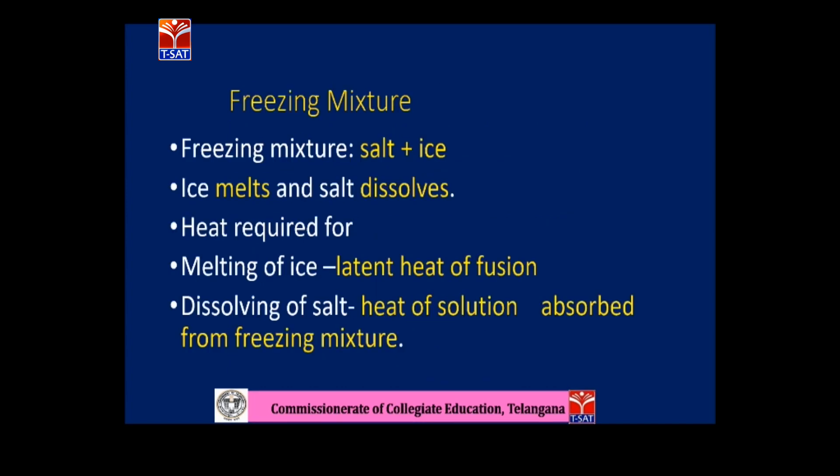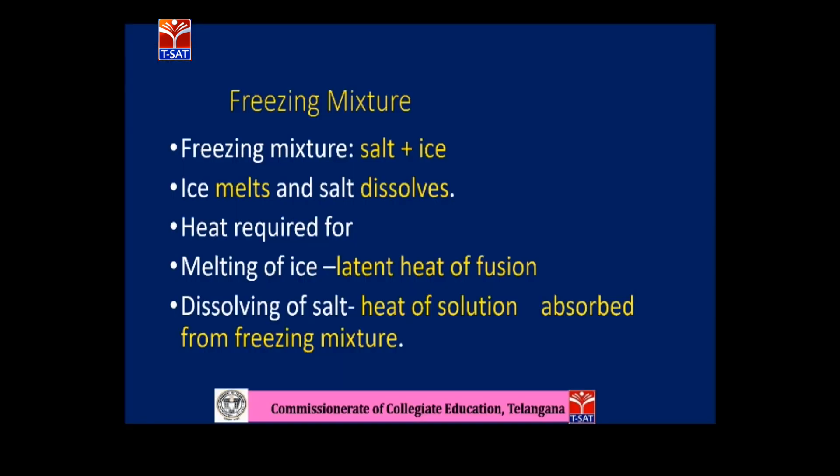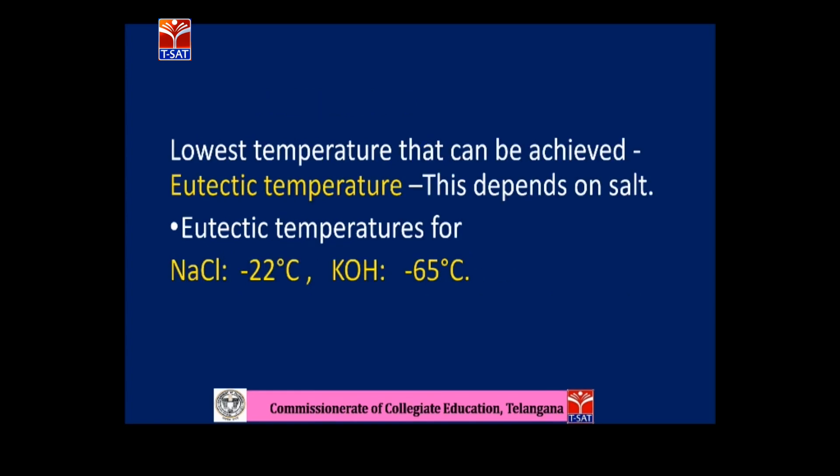The freezing mixture is a simple method. It consists of a mixture of salt and ice. When salt is mixed with ice, ice melts and salt dissolves in the melted ice. Both these processes require heat — the latent heat of fusion of ice and the heat of solution. These two heats are absorbed from the freezing mixture itself, thereby cooling it. The lowest temperature achievable by this method is called the eutectic temperature.